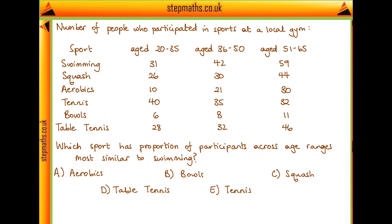Swimming is this top row here. So we're looking for which of these other sports has the proportion most similar to 31, 42, 59 — which is approximately 30, 40, 60. These rough numbers will make it easier and quicker to do comparisons.